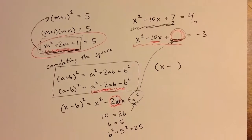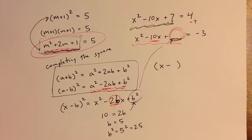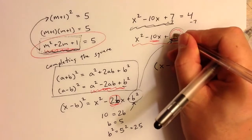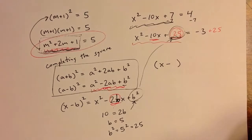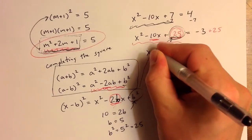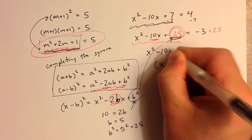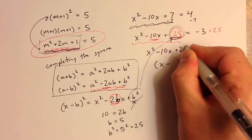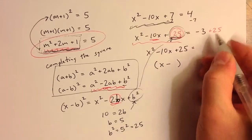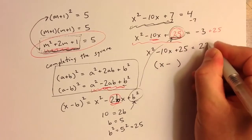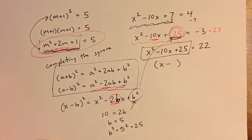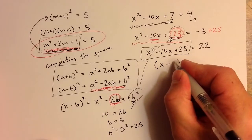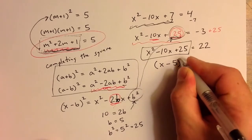To complete the square, it turns out we can do so by adding 25 to both sides. So if I add 25 to both sides, I get x squared minus 10x plus 25 equals negative 3 plus 25, which is 22. And then this is a perfect square trinomial that factors as x minus 5 squared.